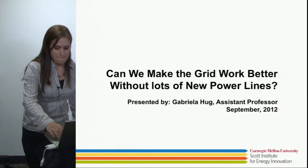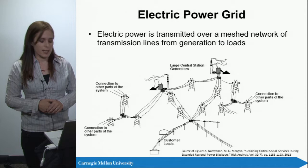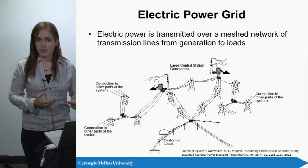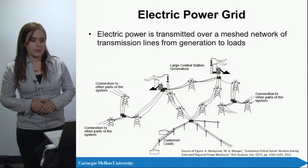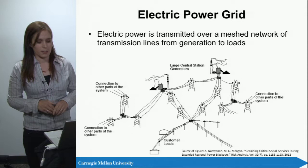In this figure you see a graphical representation of the electric power grid. We have the power stations in which electric power is generated, the customers which consume the electricity, and in the middle the transmission system — the high voltage system — and the distribution system, which is the low voltage system. The transmission system is a mesh network, meaning power can flow over multiple paths. You could have two parallel paths with part of the power flowing over one line and the rest over the other.